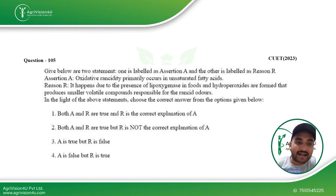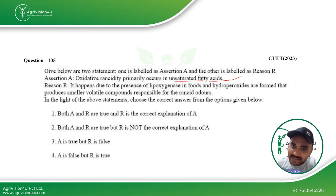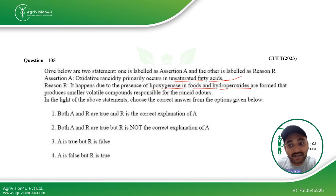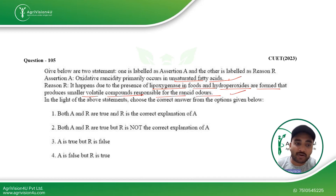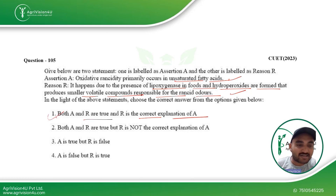The first question is an assertion-reason based question. The assertion states oxidative rancidity primarily occurs in unsaturated fatty acids — this is correct. The reason given is that it occurs due to the presence of lipoxygenase in foods, and the hydroperoxides formed produce smaller volatile compounds responsible for rancid odors. This is also correct and properly explains the assertion. So both assertion and reason are true, and the reason is the correct explanation — Option 1 is the right answer.